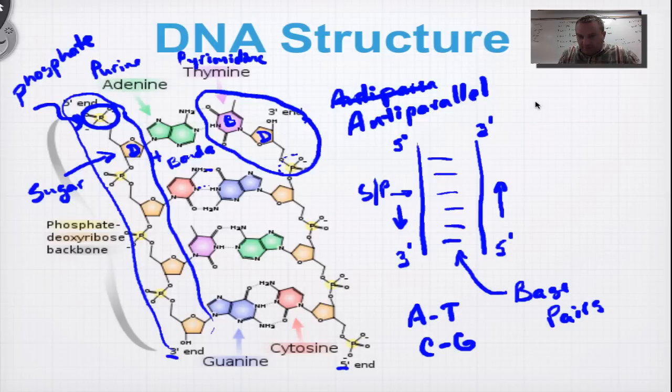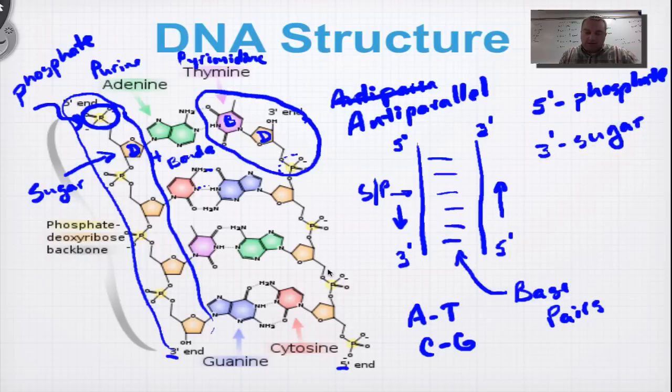So, we're going to keep this real simple. Five prime, that equals the phosphate end. See how this phosphate is sticking out down here? And then the three prime is the sugar end. I don't have a fancy way to remember that three prime is sugar. You just need to remember that the backbone is made out of sugars and phosphate. So, if one end is a phosphate, the other end has to be a sugar because it's not made out of anything else. So, maybe you can think of you need three sugars in a cup of coffee or something like that.